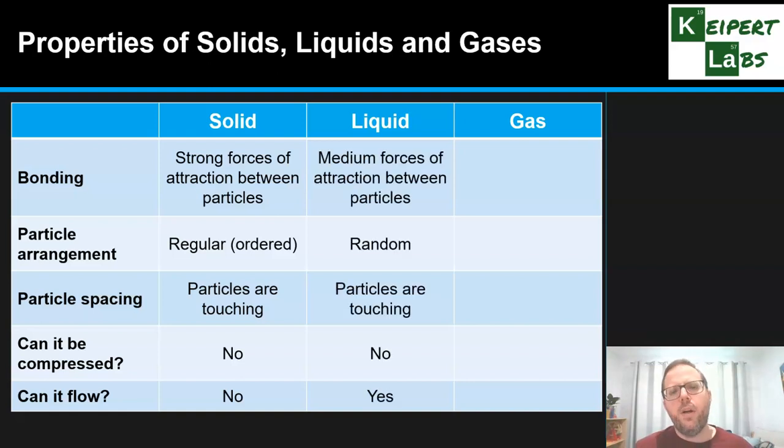Whereas when we look at a liquid, we see medium forces of attraction between the particles. Not as strong as in a solid, but there's still something there. But the particle arrangement is what we would call random. That is not in this ordered regular pattern, rows and columns and 3D structures, but rather they're kind of just jostling in next to one another in whatever container that you put it in, or whether you just pour something onto a surface like the table and we see that it kind of takes up a random arrangement.